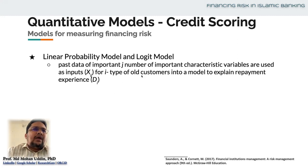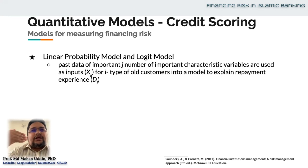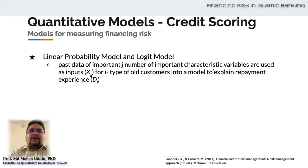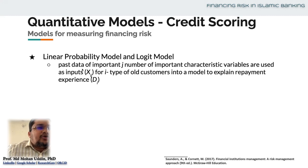Then we look into some important characteristics that might be able to explain the default behavior of the customer. For example, the existing leverage of the customer, profit margin, liquidity status, operating profit, activity, efficiency, and turnover of the customer — different types of variables. If we think that a particular one, two, three, or four types of variables are very important, we identify those. Let's say the number is five variables, then J will equal five. These J number of important characteristic variables will be used as input — the explanatory variables of the default behavior of those customers.